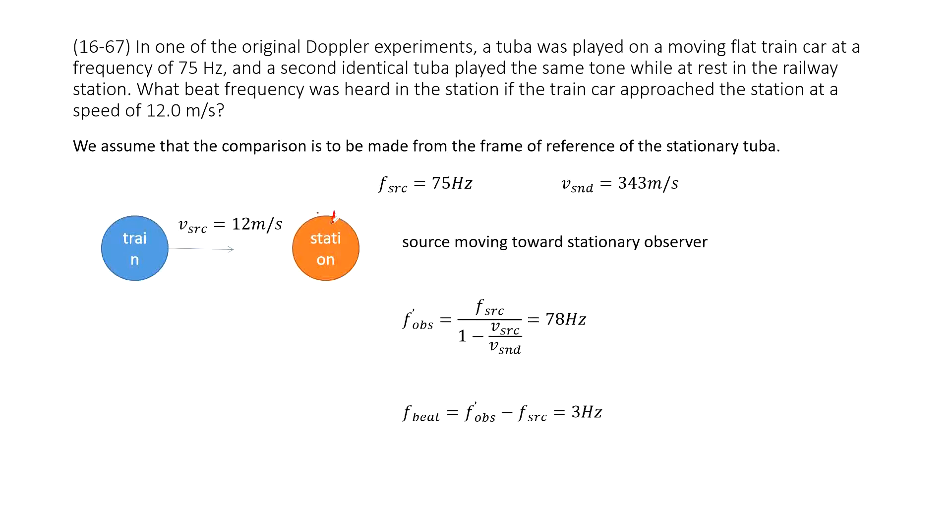So how can we do that? First thing, we need to find the frequency of the station observed from the tuba on the train. And then we can see this is the moving source towards the stationary observer. And then we can have the equation, look like this one in our textbook. Input known quantities, get answers here.